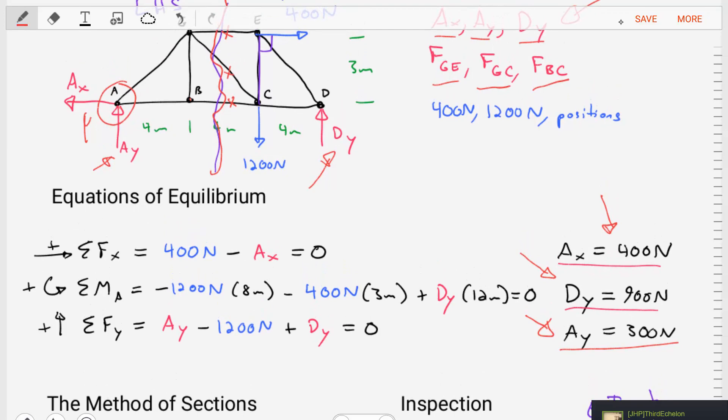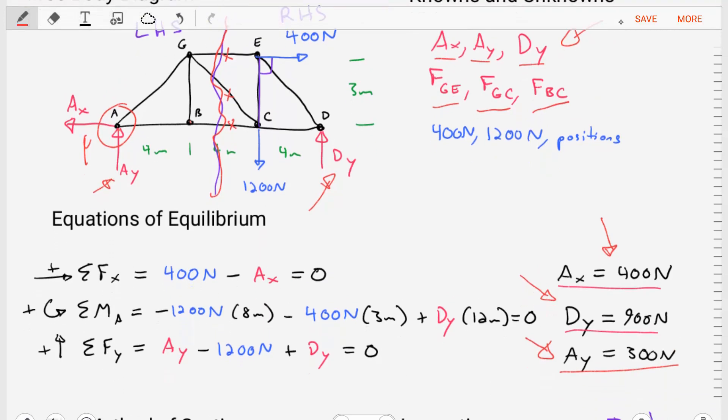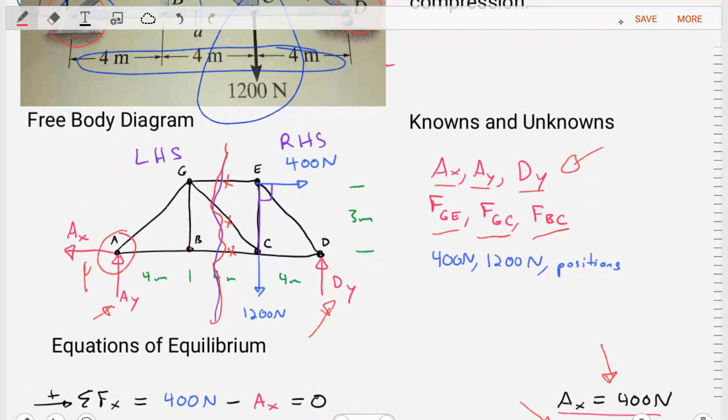So now we have all of our support reactions. We know that information, and now we're ready to apply the method of sections. Now, when applying the method of sections, we can choose either side of the section line that we draw.